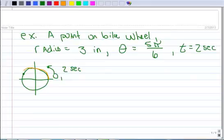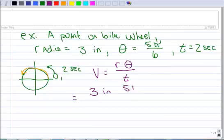So we want to calculate the velocity. So we can use the formula. Velocity equals the radius times the central angle measure divided by time. And let's substitute those in. So the radius we said was 3, and that's 3 inches. And the central angle measure is 5 pi over 6. And our time is 2 in seconds.